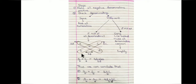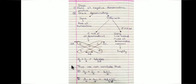The denominator will be b times d, so a/b plus c/d equals (ad plus bc) upon bd. When we add two rational numbers with different denominators and their HCF is equal to 1, we add them using this formula: (ad plus bc) upon bd.